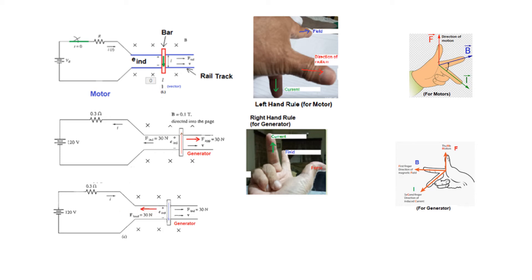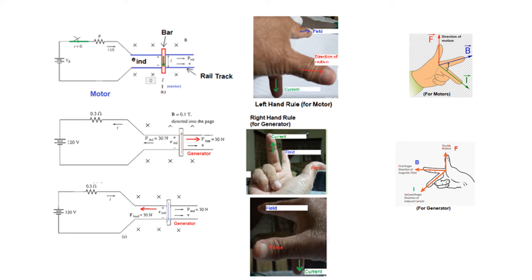Another example of the generator: instead of pulling the bar towards the right, if you pull it towards the left, we again use the right hand rule. The second finger points to the field, the thumb now points towards the left because the applied force is towards the left, and the middle finger is pointing down — meaning the current will flow from top to bottom. The concept is applicable in linear motors as well as rotating motors and generators.